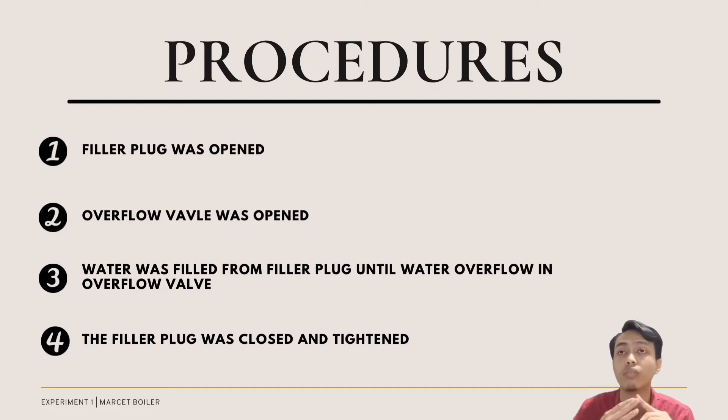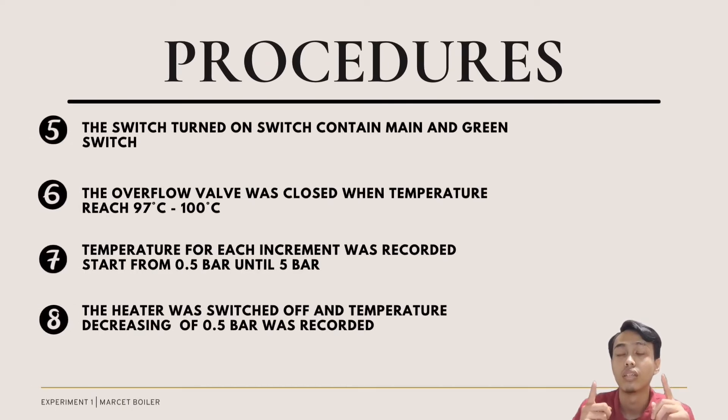Switch on the switch in the control panel which contains the main and green switch. Once the temperature reaches the range 97 to 100 degrees Celsius, close the overflow valve. Then each increment of temperature will need to be recorded starting from 0.5 bar until 5 bar. The last step is when the pressure comes to 5 bar, switch off the heater. And record every temperature decrease at 0.5 bar intervals. All data will be recorded in Table 1 below.